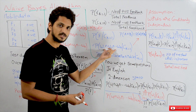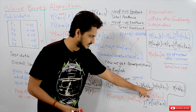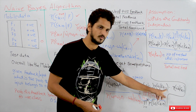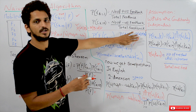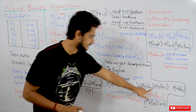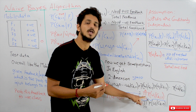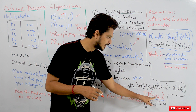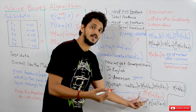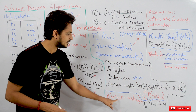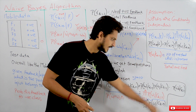Based on this conditional independence assumption, P(W1 AND W2 AND ... W_n | CK=1) can be written as the product: P(W1 | CK=1) · P(W2 | CK=1) · ... · P(W_n | CK=1), which in mathematical notation is ∏(i=1 to n) P(Wi | CK=1). Similarly, for the negative class: P(W1 AND ... W_n | CK=0) = ∏(i=1 to n) P(Wi | CK=0).